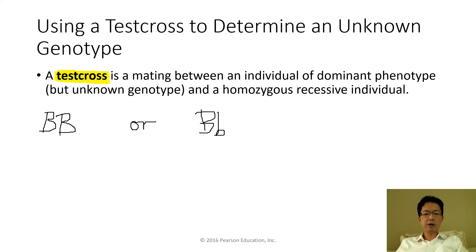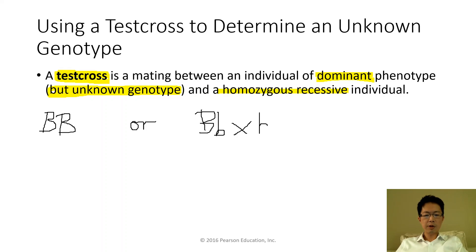A test cross involves mating an individual with a dominant phenotype but unknown genotype — such as big B big B or big B small b — with a homozygous recessive individual, which we know for certain is small b small b.